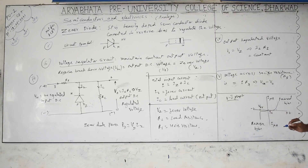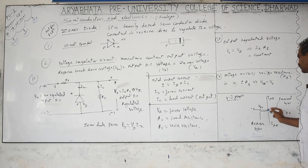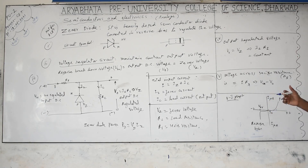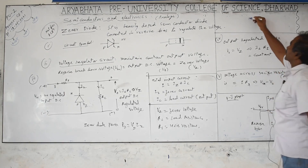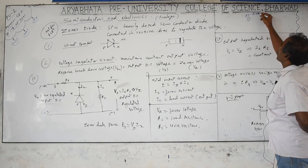In reverse bias, only minority charge carriers flow, so current is in microamperes. But if the reverse bias voltage is further increased beyond a particular value, the minority carriers increase in number, collide with covalent bonds, break them, and raise the temperature. That breakdown in an ordinary PN diode is called avalanche breakdown.